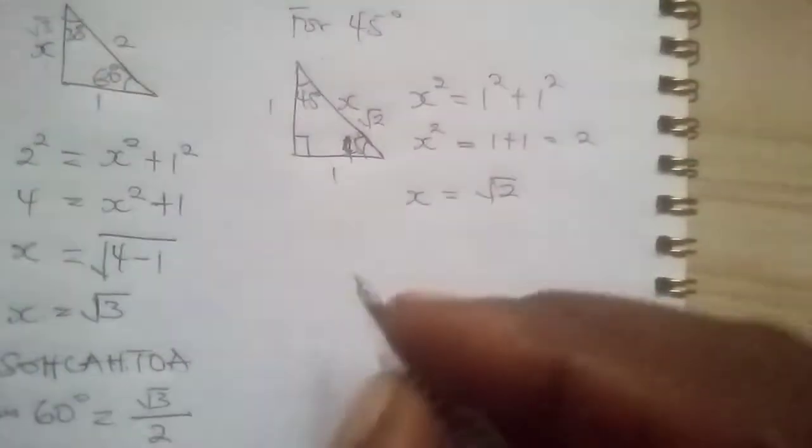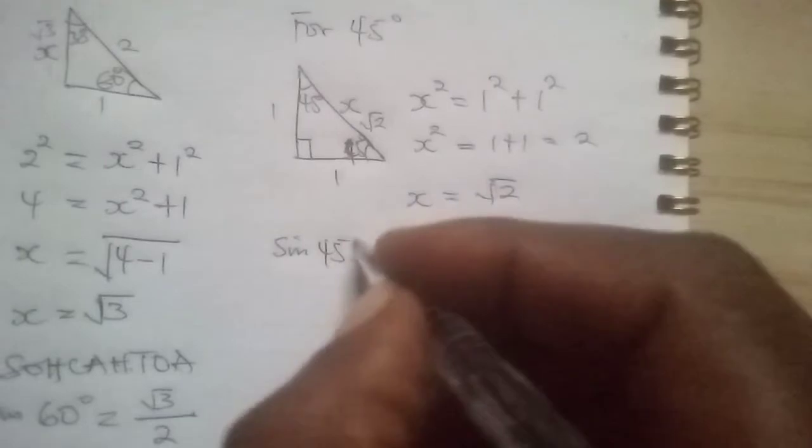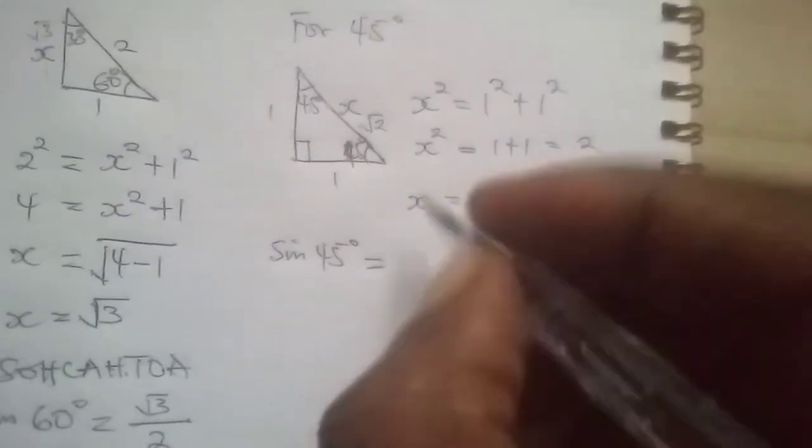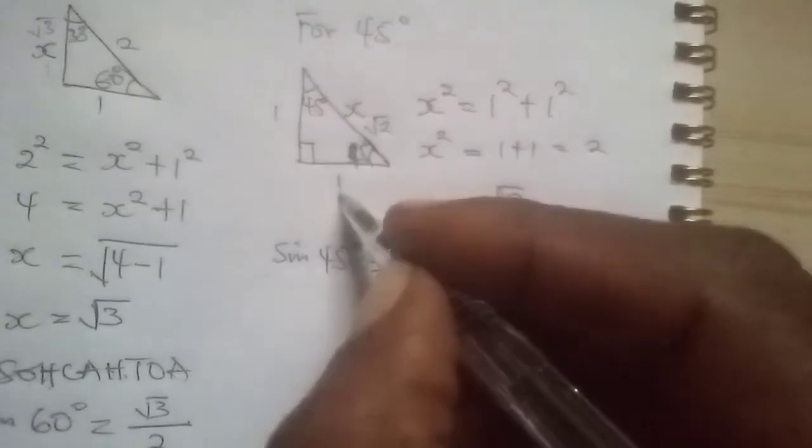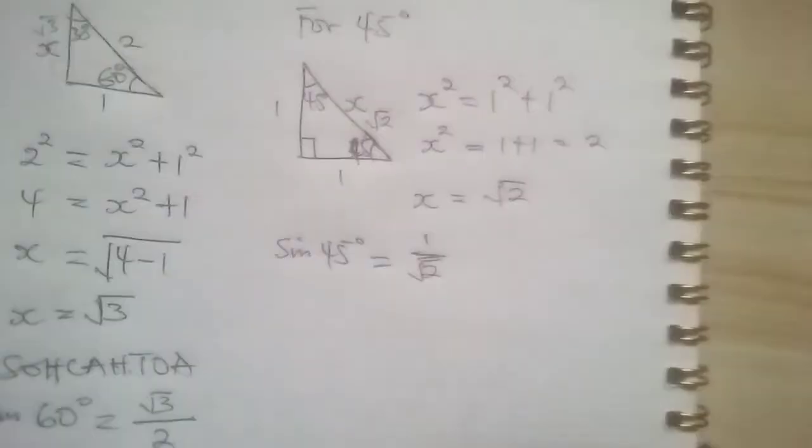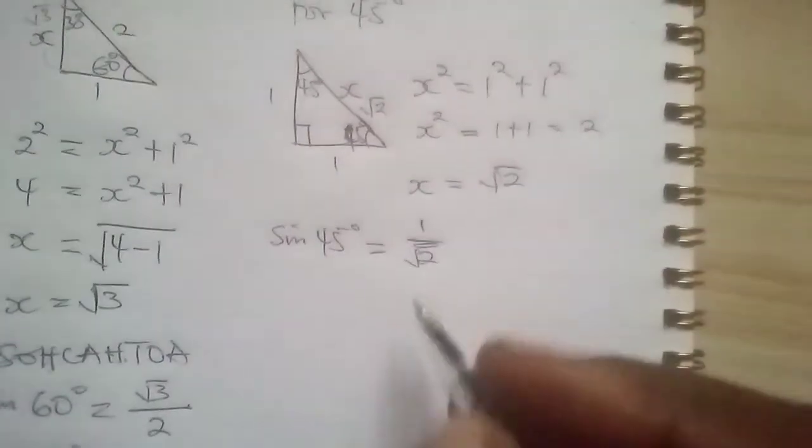So if we want to find what sine 45 degrees is, sine is opposite over hypotenuse. So it will be opposite, any opposite you pick is 1. Hypotenuse is root 2. So 1 over root 2.